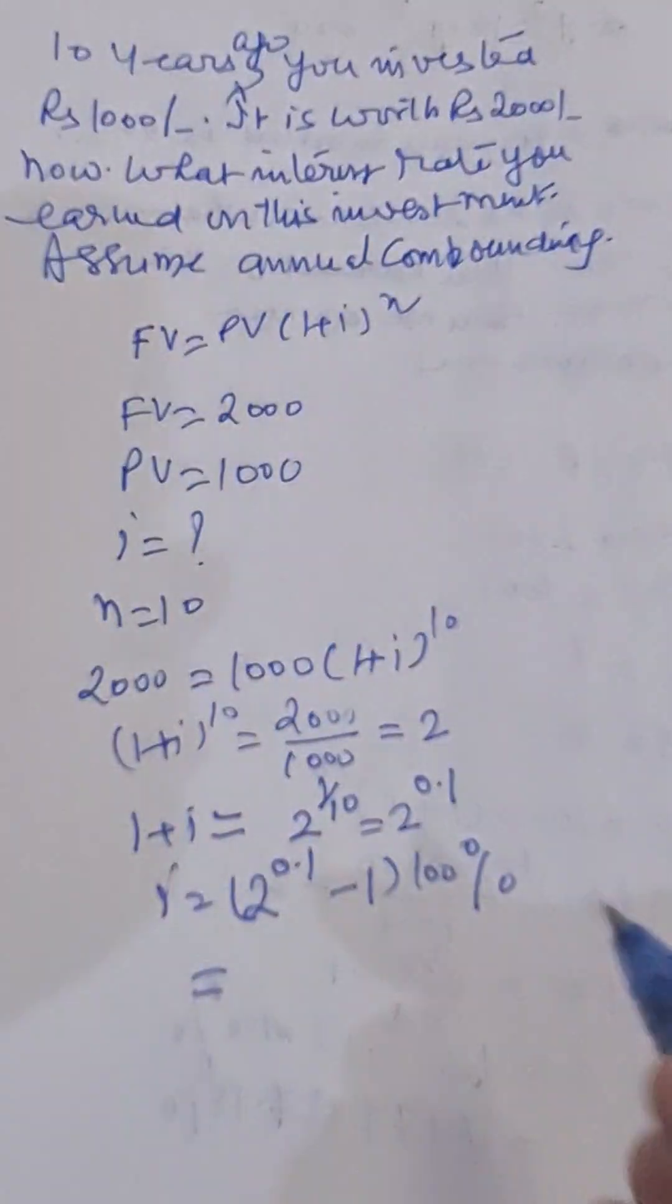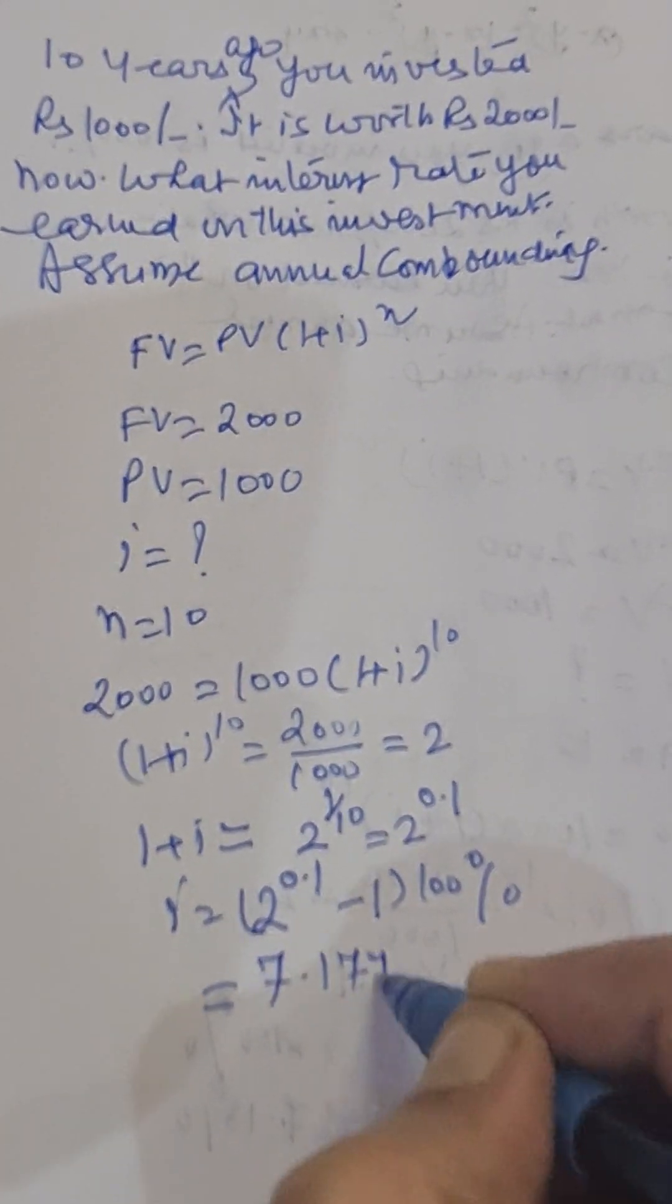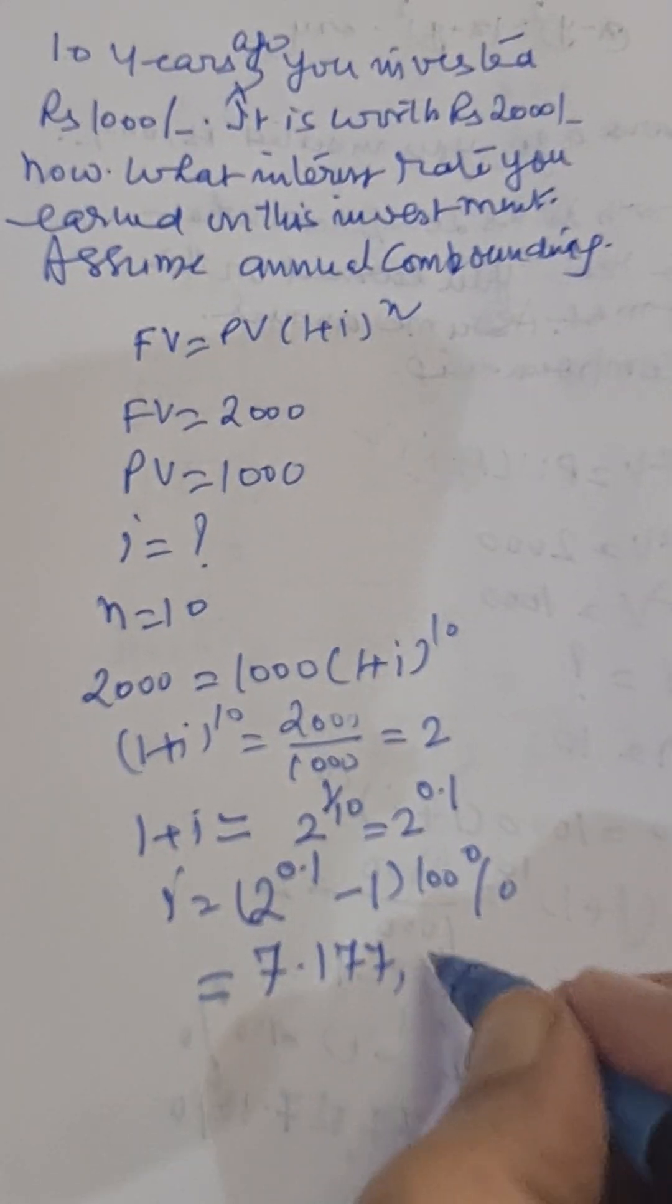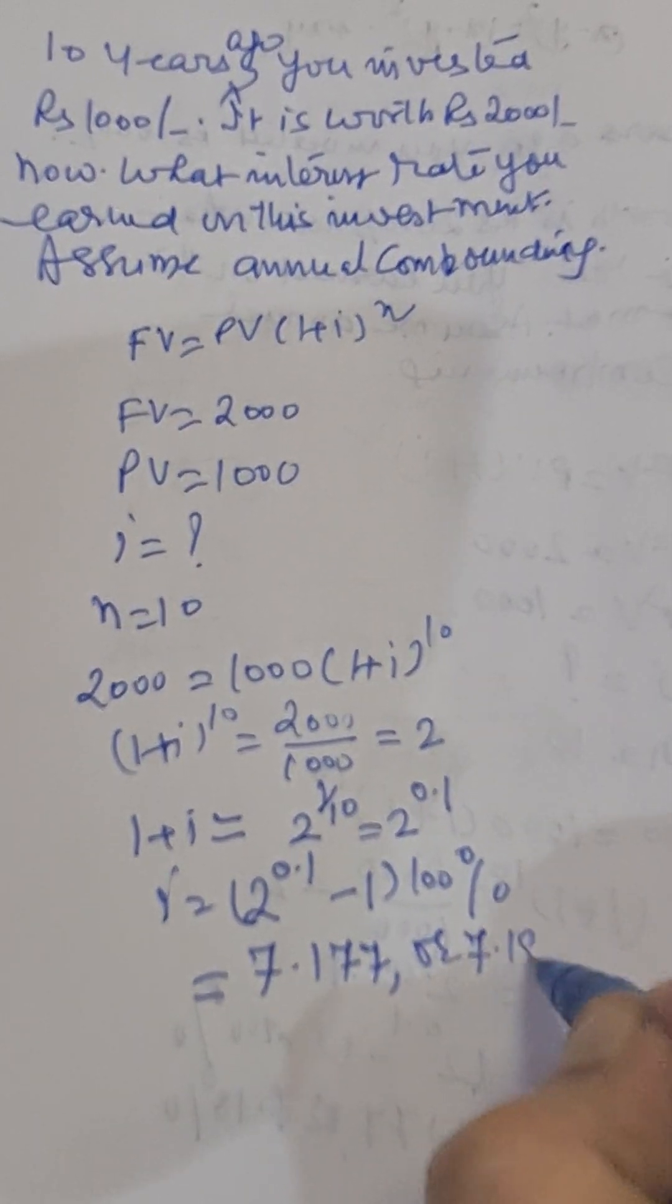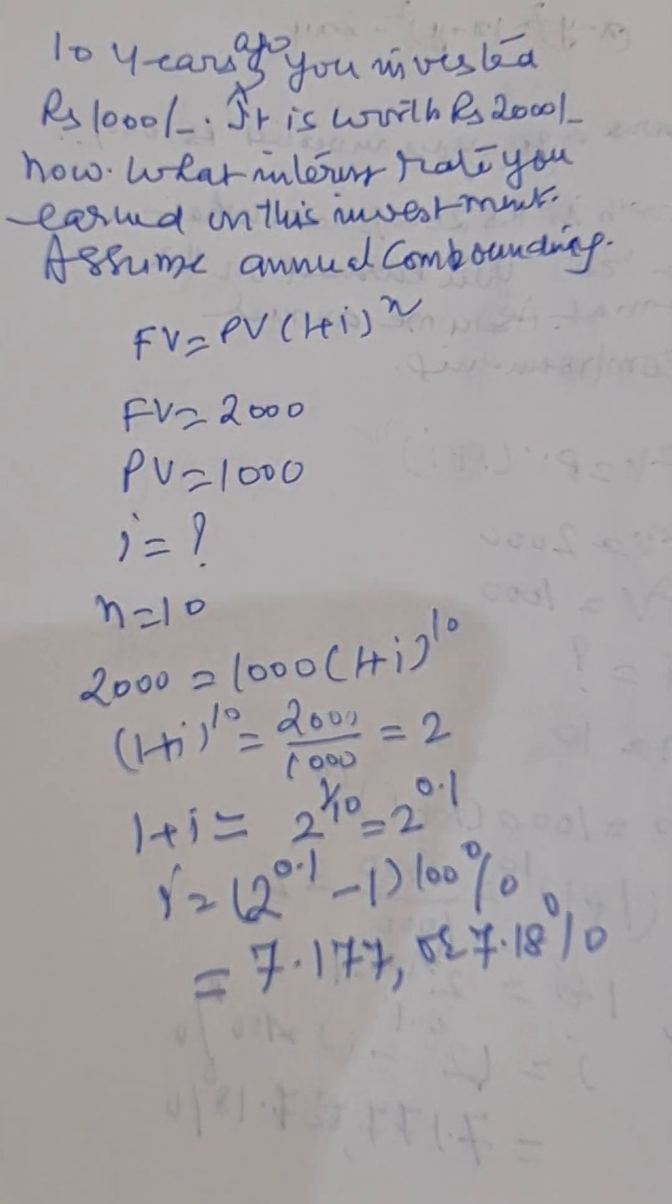So we get seven point one seven seven or seven point one eight percent, say up to two decimal places.